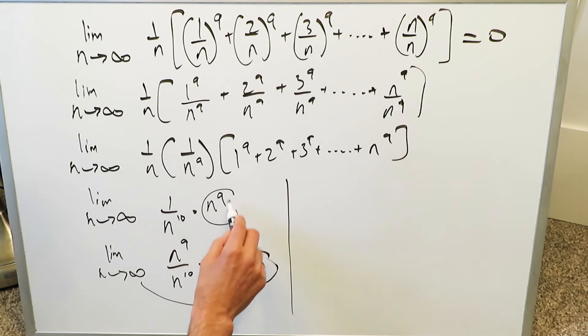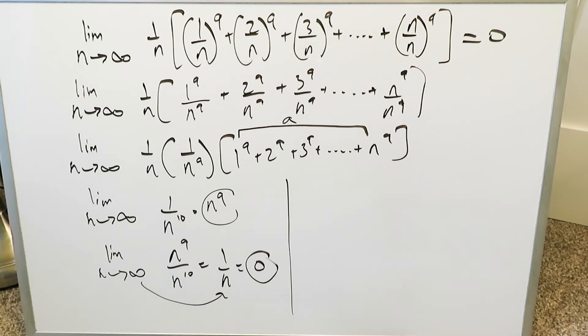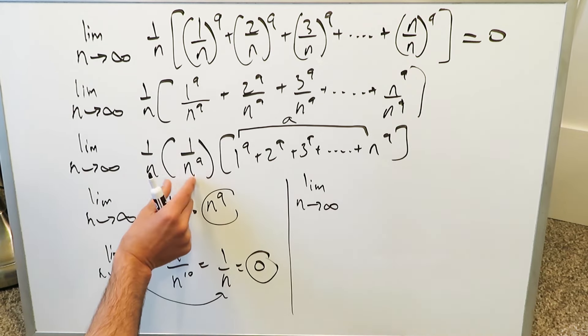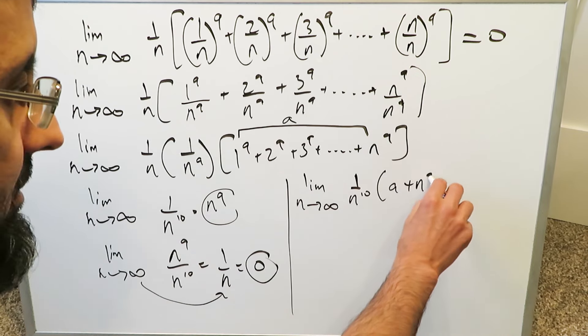Another way without doing this assumption would be all of these items here represent a certain constant, and we'll call that constant a. Now we're looking at limit as n approaches infinity. We can still combine these items here. We have 1 over n to the power of 10, and then we have a plus n to the power of 9.